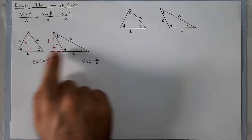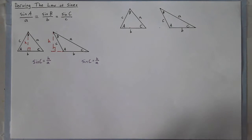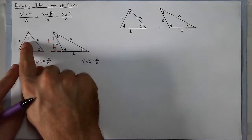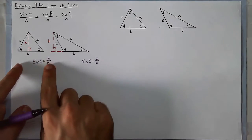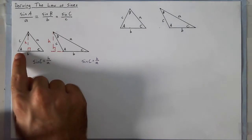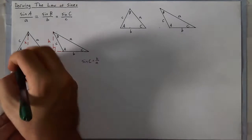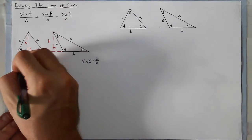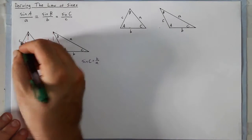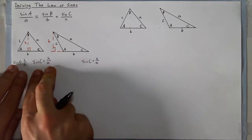Next, we'll look at the other angle — angle A — and use both statements to relate H, hopefully ending up with the law of sines. Looking at angle A on the acute triangle, we can see that sine of A is equal to H over c. So you're already seeing that swapping pattern happening here.